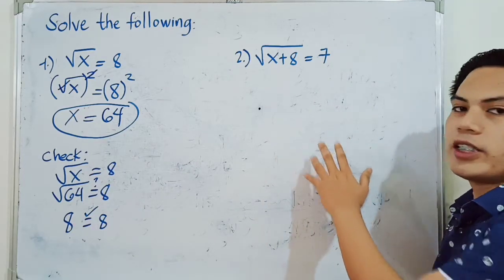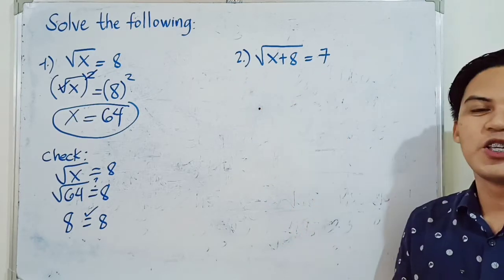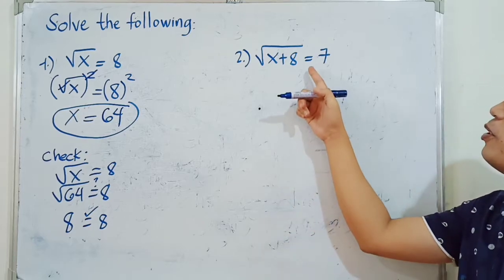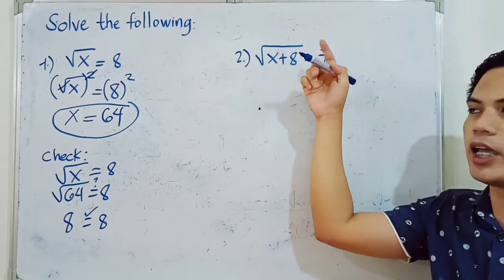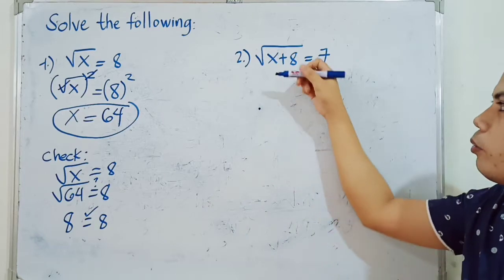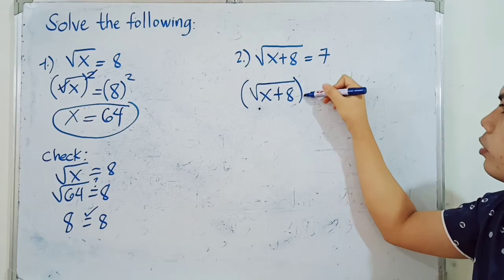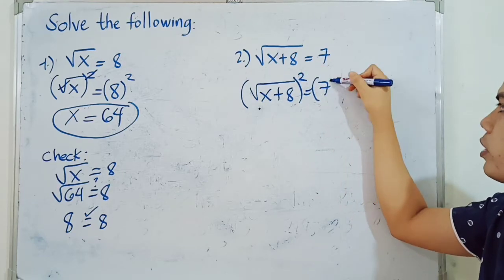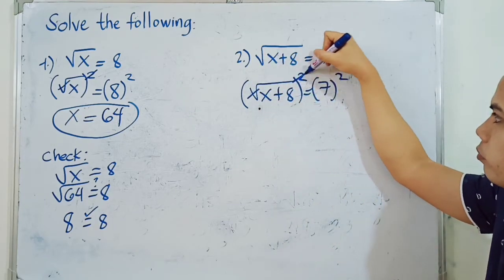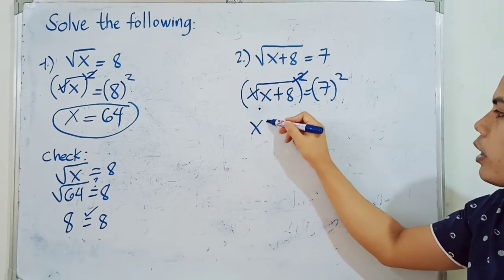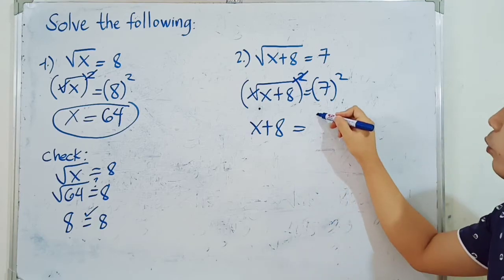For example number 2, we have the square root of X plus 8 is equal to 7. In this case, the constant term is already isolated. The next step is to get rid of the radical sign — same as what we did in number 1 — so we square both sides of the equation. The radical sign is cancelled out, and what remains on the left side is X plus 8. On the right side, 7 squared is equal to 49.